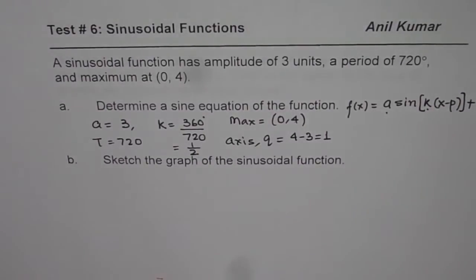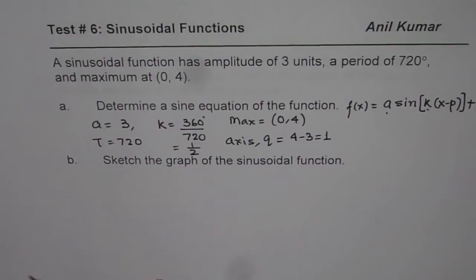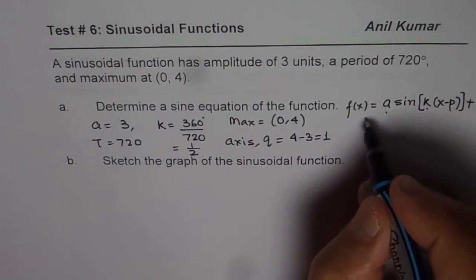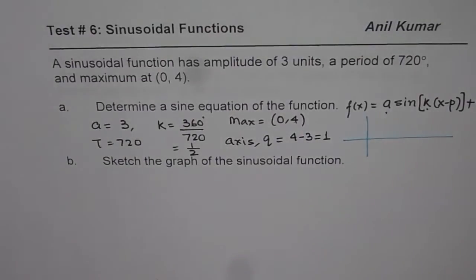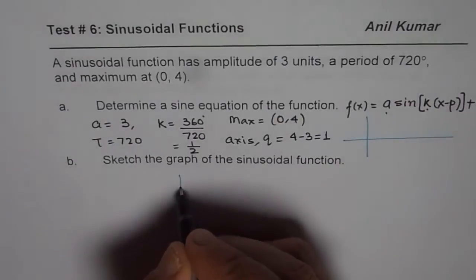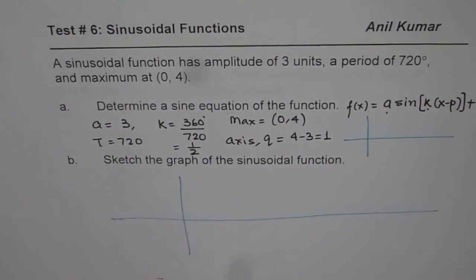That gives us all the values. A we know is 3, k is half, q is 1 for us. But what is P? Can you tell me how to find the phase shift for this wave? Let me make a rough sketch first and then we will figure out how to find the phase shift. I am actually giving you time so that you can come out with the answer.